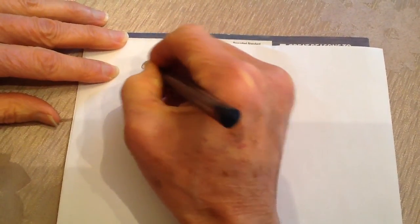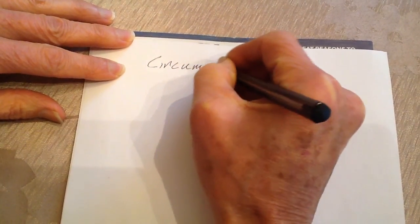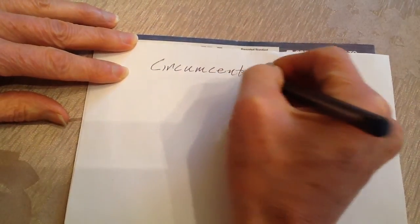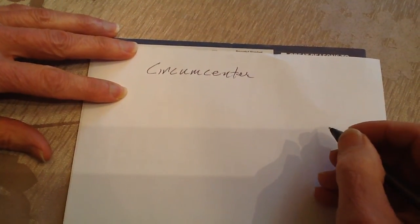All right, today we're going to talk about the circumcenter. And this is of a triangle, and this is another one of the points of concurrency.